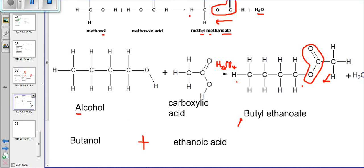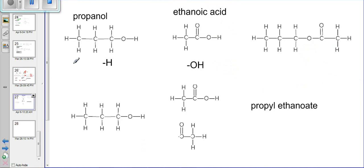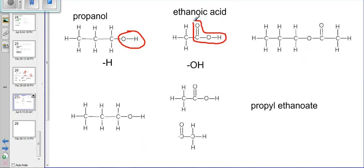Let's explain this further with another example. Here we have propanol as our alcohol — note the OH group. We also have ethanoic acid here, with C double bond O, single bond O, H. Here is the ester that is formed. Let's figure out how this reaction takes place.